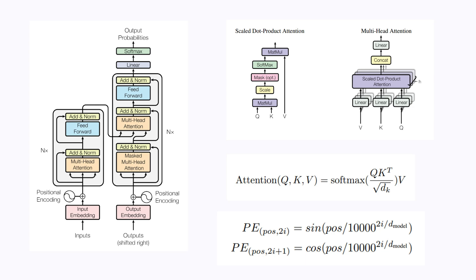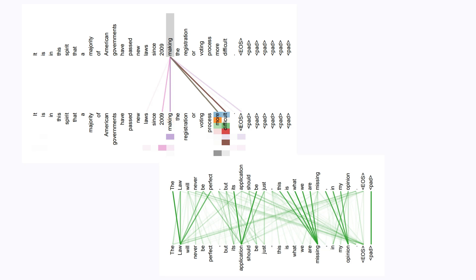It proposed the classic Transformer architecture that we all know and love today, including concepts like multi-headed attention and positional embeddings. What is really new about the self-attention mechanism in Transformers is it allows the model to process an entire sequence of text all at the same time. This was a major improvement over previous attention mechanisms, which only let the model look at one token at a time.